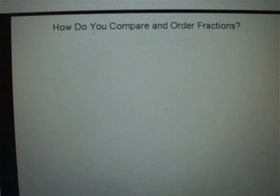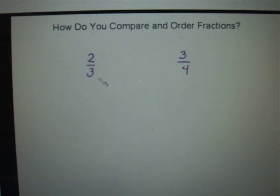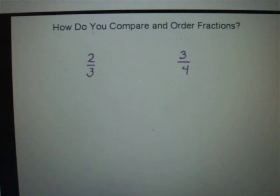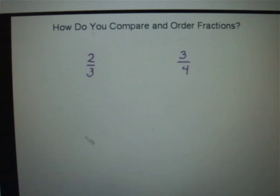Now let's compare two fractions with different denominators that are not unit fractions. For example, let's compare 2/3 and 3/4. It would be a lot easier if the denominators were the same, because then we could just compare the numerators. So how could we change these fractions so that the denominators are the same? We do that by making equivalent fractions. We need to find a denominator that's a multiple of both 3 and 4. 3 times 4 equals 12, so 12 is a multiple of both 3 and 4.